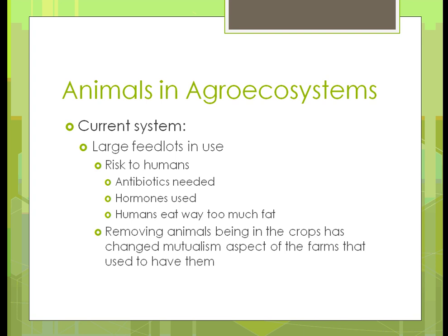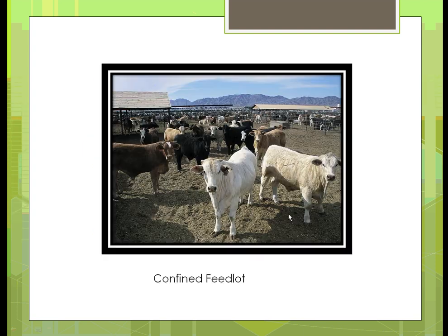Removing animals has basically changed the mutualism aspect of farms that used to have them. We covered mutualism in Units 8 and 9 — it's two organisms that work together to each other's benefit. In this case, that would be animals eating grasses in pastures, with the grasses benefiting by growing better, the pastures being fertilized, and the animals getting their nutrition from that instead of corn and soybeans.